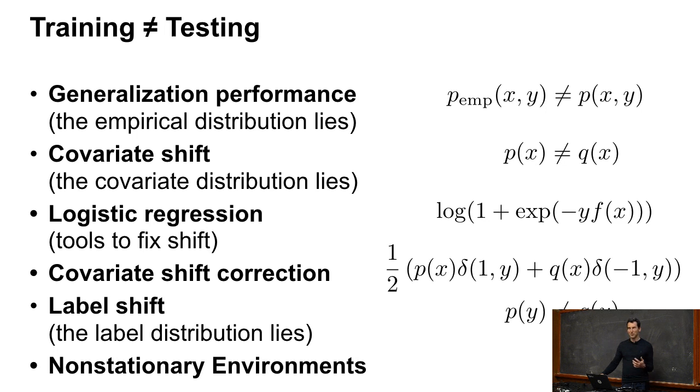You've already encountered some of those in terms of generalization performance and overfitting, namely the fact that the empirical distribution lies. So the empirical distribution isn't really what you're going to see later on. Think of the empirical distribution as Mu and Alex teaching a class and handing out homework. The true test distribution is the midterm exam. We'll try to keep that deviation as small as possible, but for obvious reasons, you may not always be able to do that.